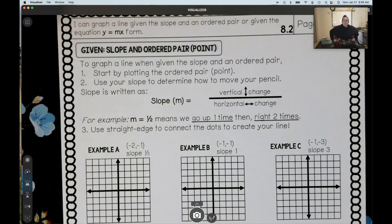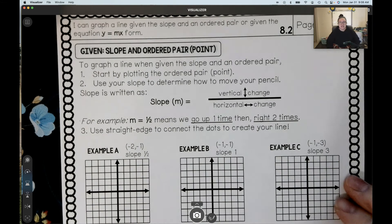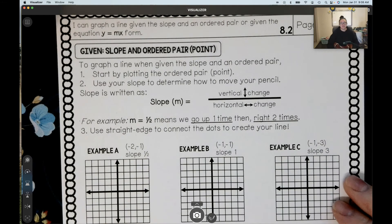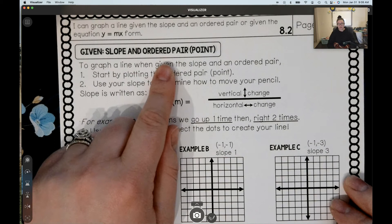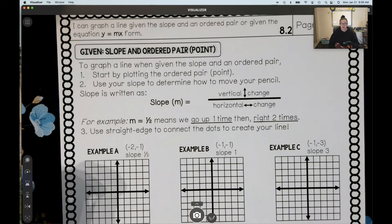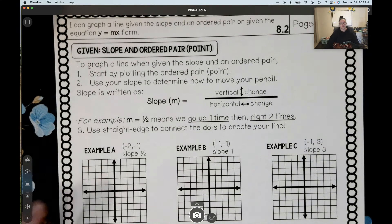Now we're on to graphing proportional relationships, multiplicative relationships. So now they're going to be giving us a slope and an ordered pair or a point to help us plot our line. Again, this is for multiplicative relationships when we have y equals mx, y equals mx form.